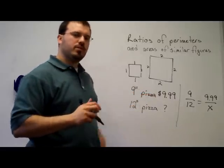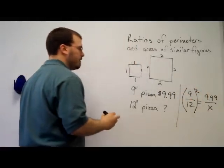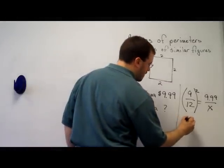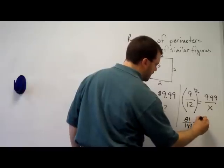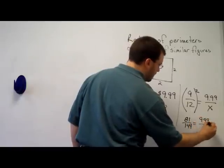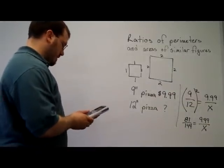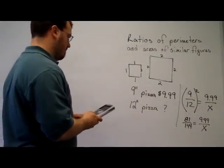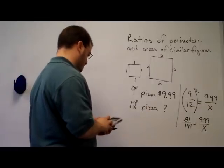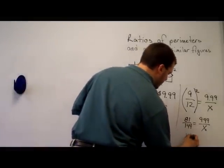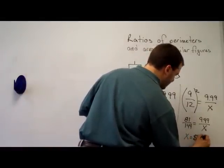But, pizza, we're concerned with area. So we would need to do the ratio of the sides squared. So we would have 81 over 144 is equal to 9.99 over x. Solve that. x is equal to $17.76.